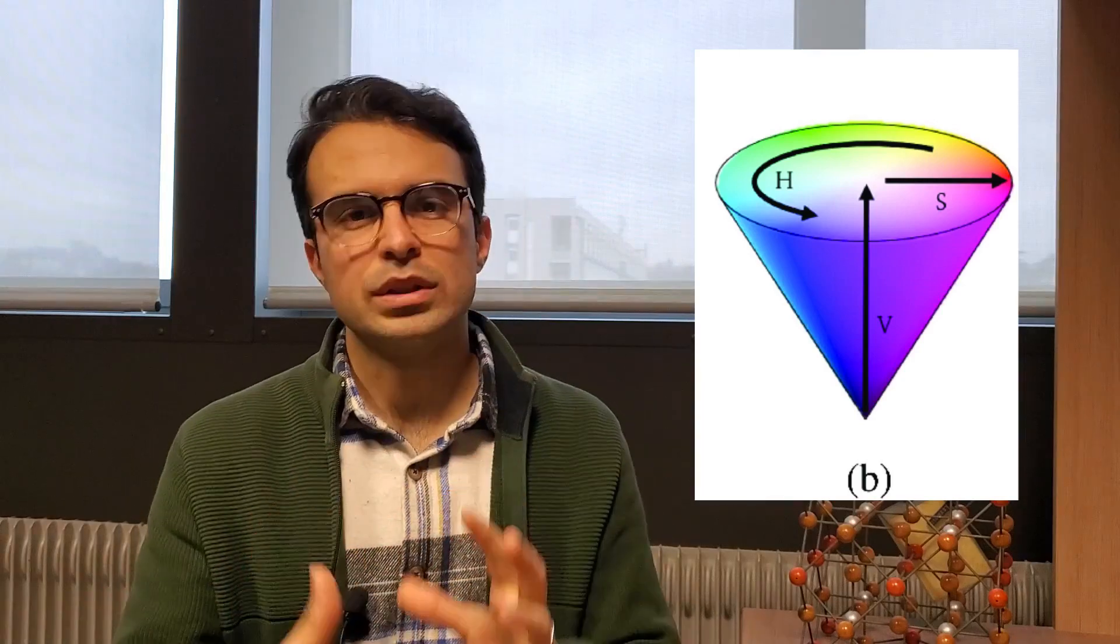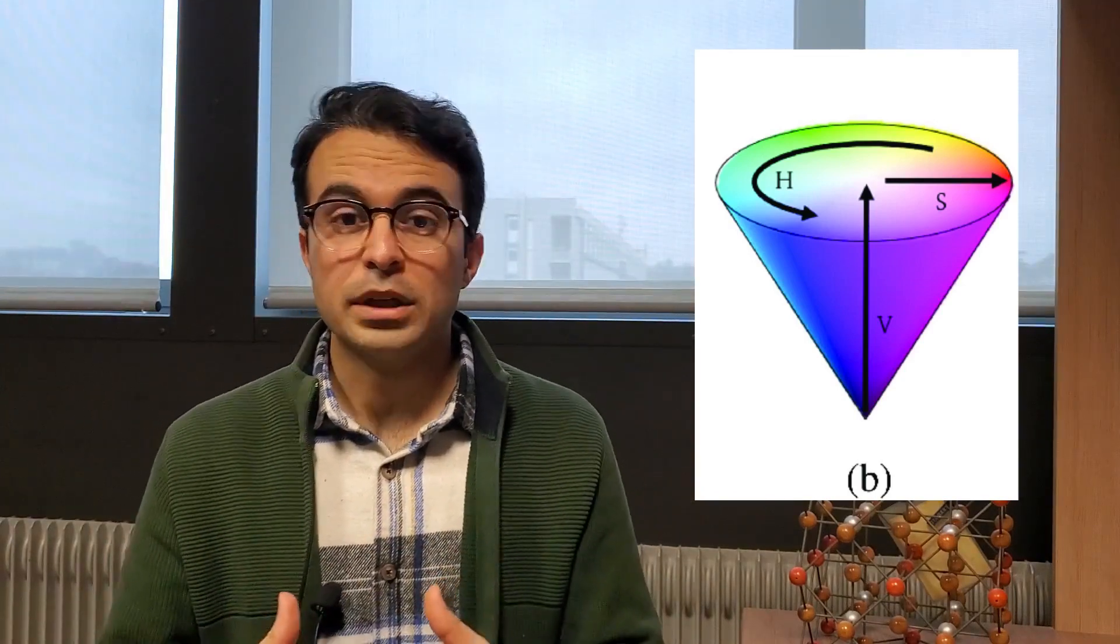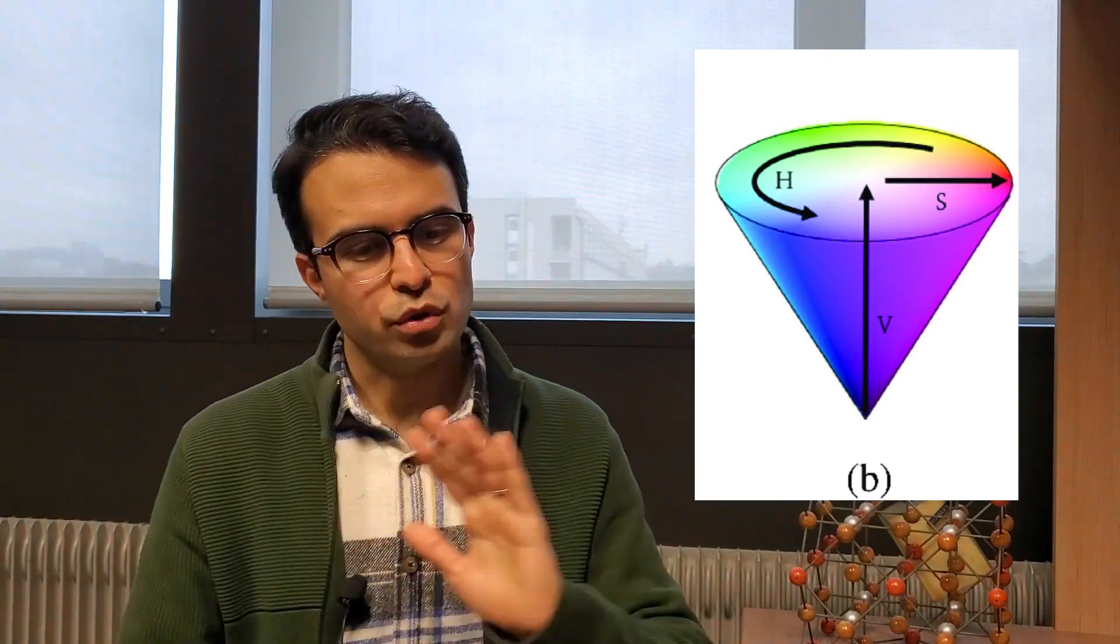You can represent saturation, how much a color is saturated and is pure. And you have one layer of information as value, how much you are far from black or how much you are close to white.